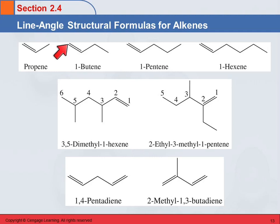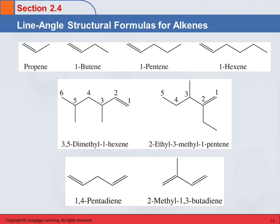So one, two, three, four — four carbons, butane. The double bond makes it butene, and this one is 1-butene. What would 2-butene look like? We'd have the double bond in the middle, right? So here's butane, and if we put the double bond in the middle, then that's 2-butene.